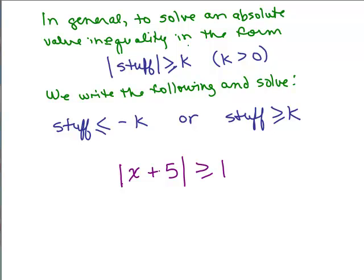We ended the last video with this: in general, to solve an absolute value inequality in the form |stuff| ≥ K where K is a positive number, we separate it into two different inequalities and we solve this compound inequality. So let's do it on this problem.